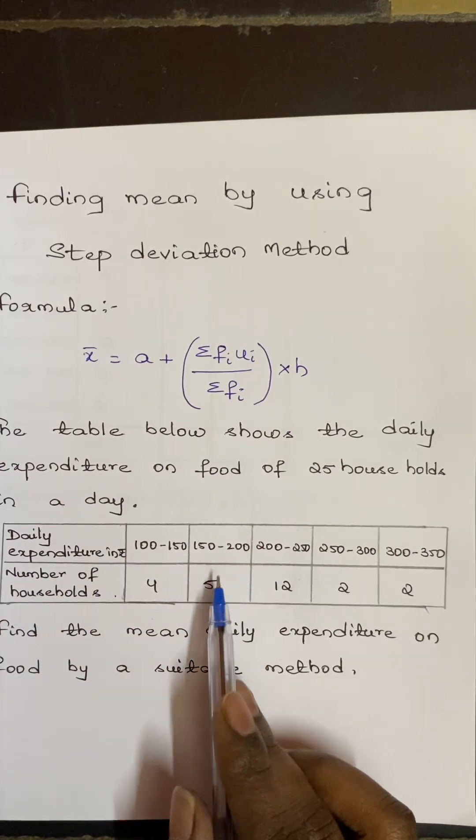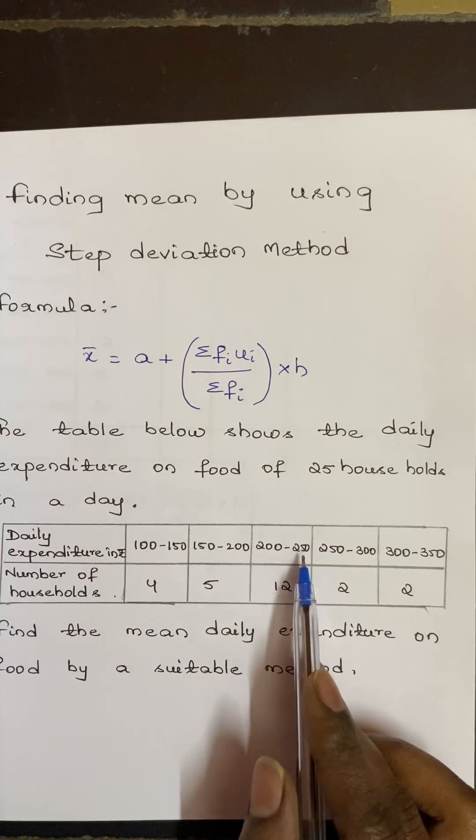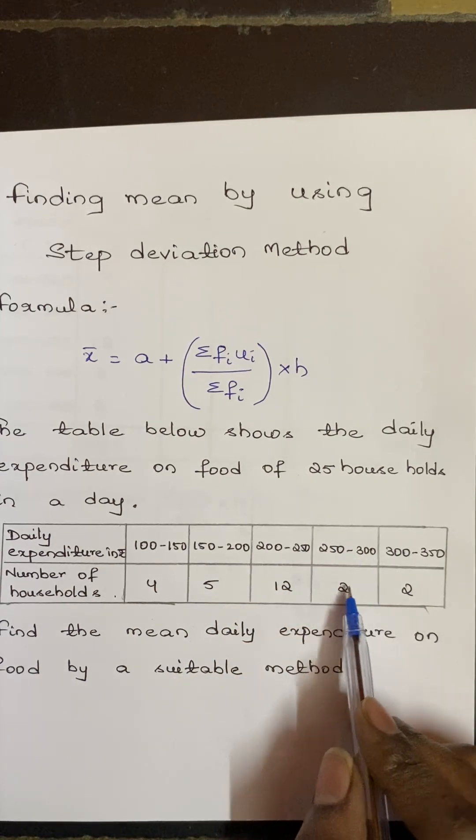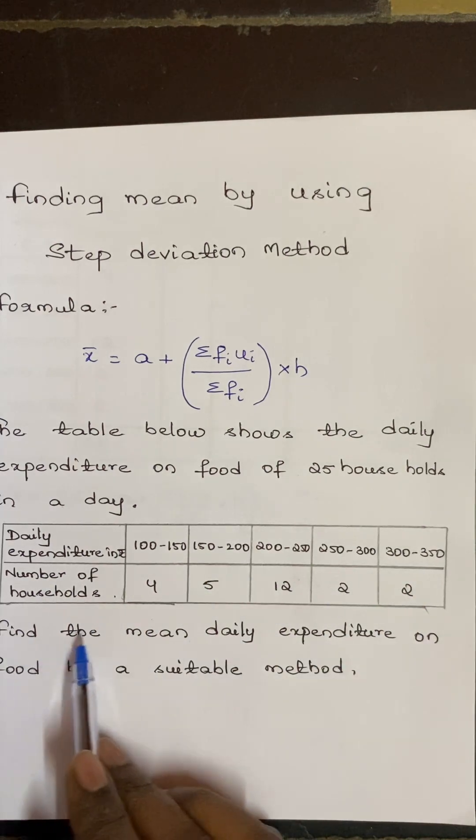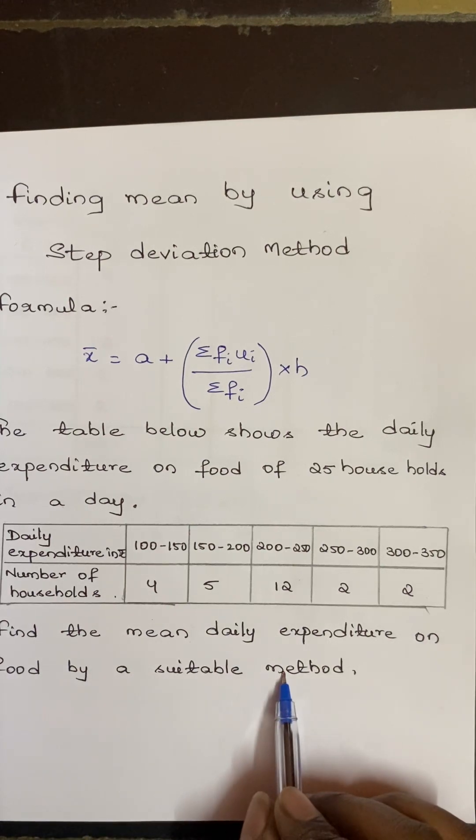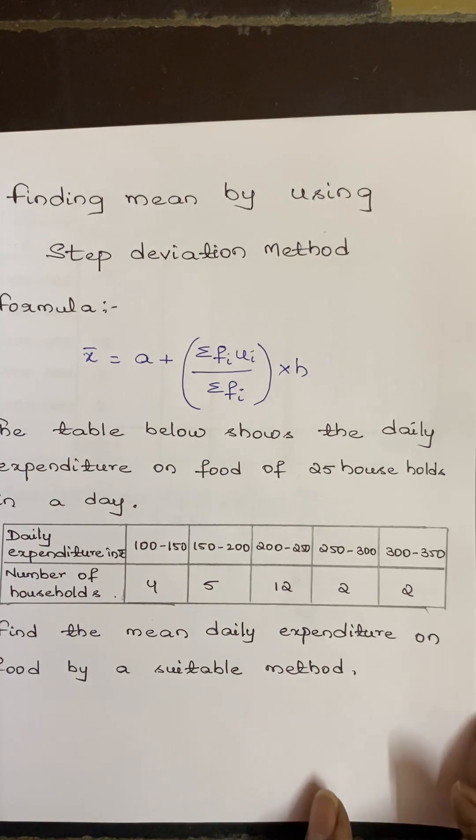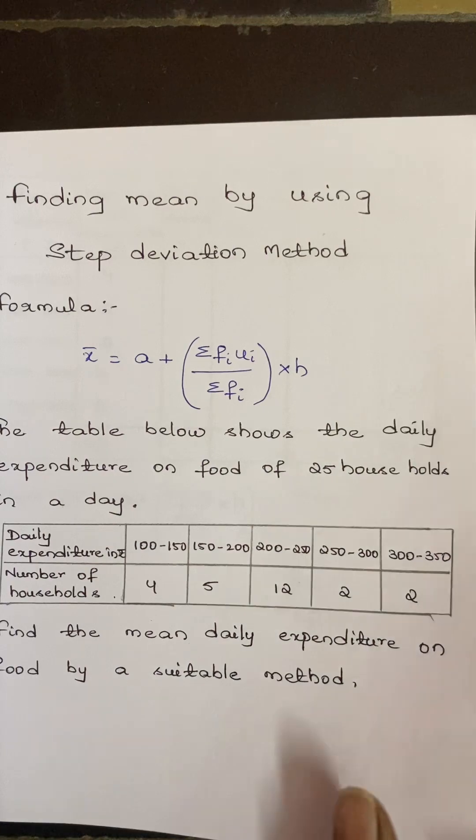150 to 200 has 5, 200 to 250 has 12, and 250 to 300 has 2, and 300 to 350 has 2. The question is: find the mean daily expenditure on food by a suitable method. So here the method which we have taken is step deviation method.